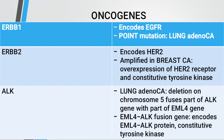ERB1 encodes EGFR and helps with primary mutations in lung adenocarcinoma. ERB2 encodes HER2, which is amplified in breast carcinoma — overexpression of HER2 leads to constitutive tyrosine kinase activity. ALK gene in lung adenocarcinoma: deletion of a chromosomal segment fuses part of the ALK gene with part of the EML4 gene, creating the EML4-ALK fusion gene encoding an EML4-ALK protein with constitutive tyrosine kinase activity.